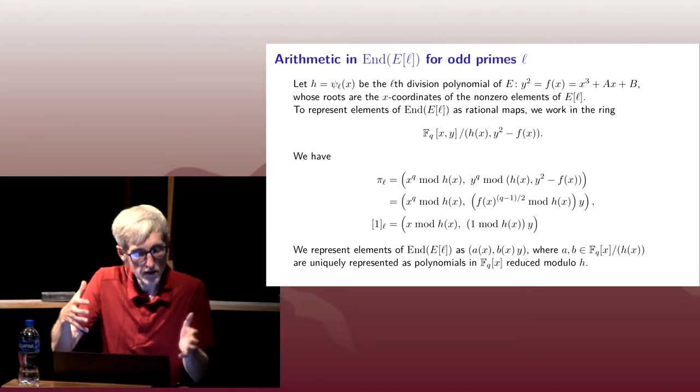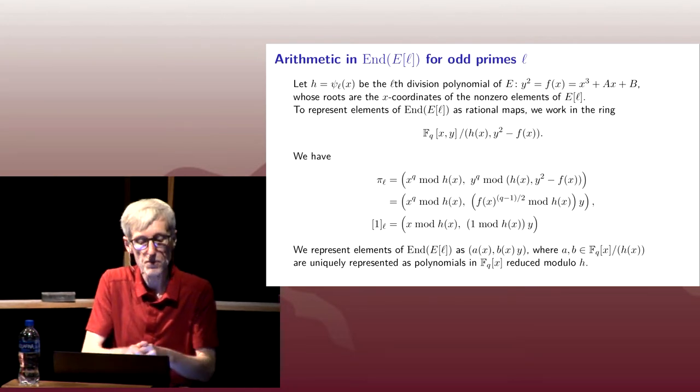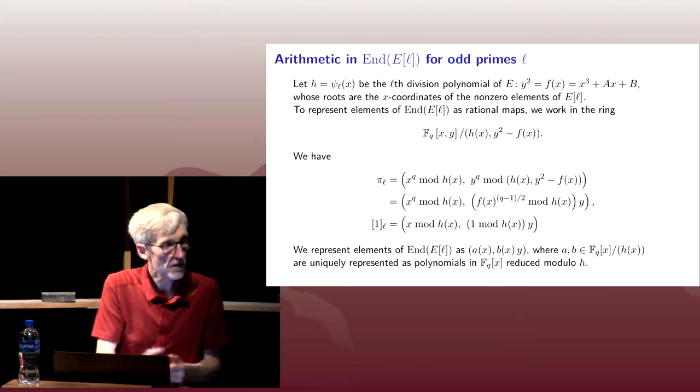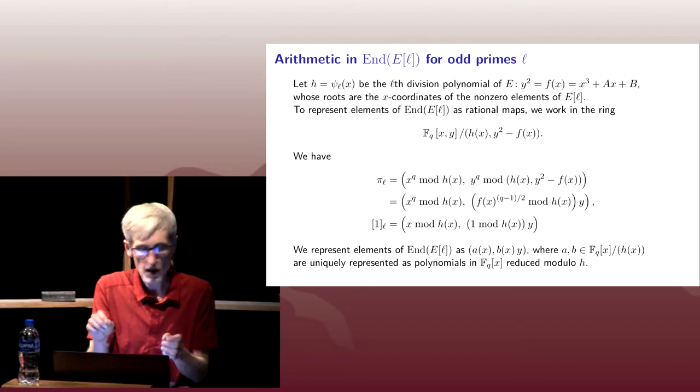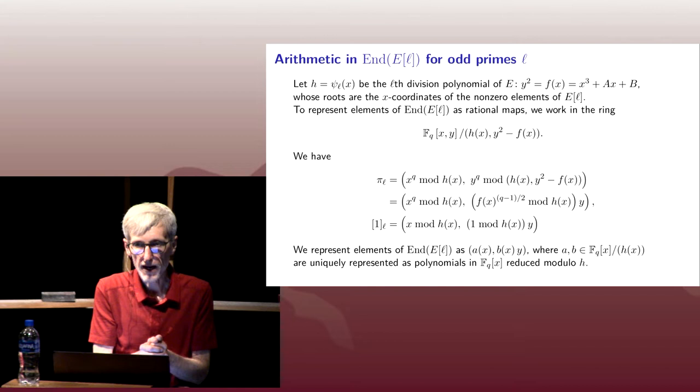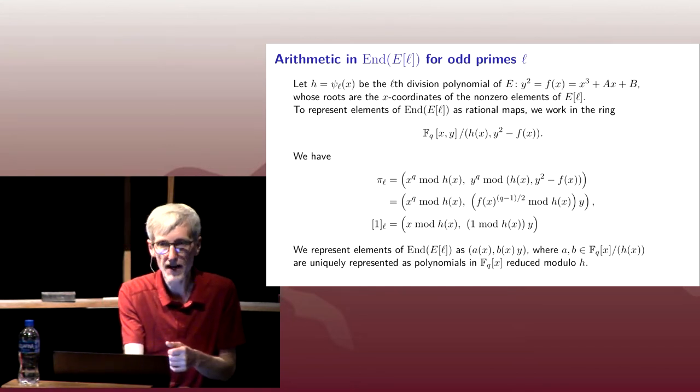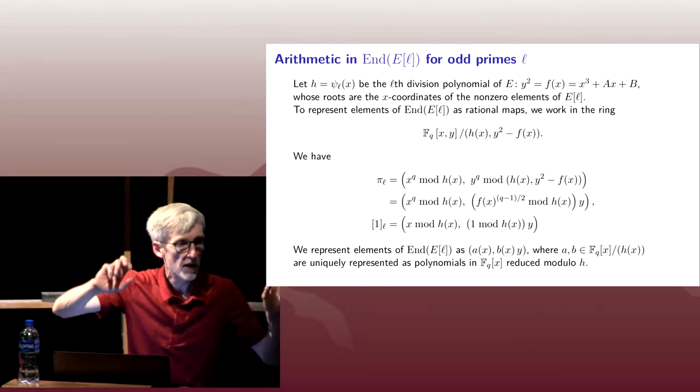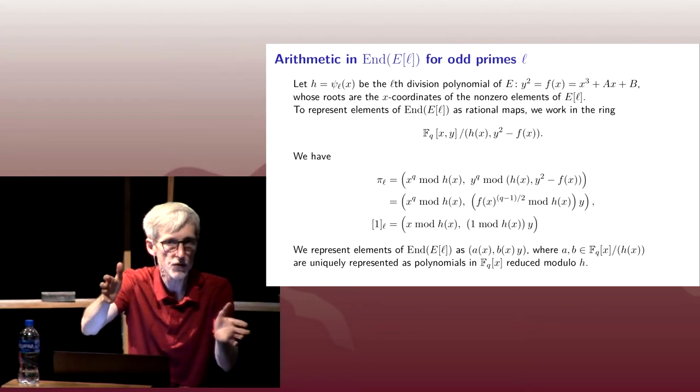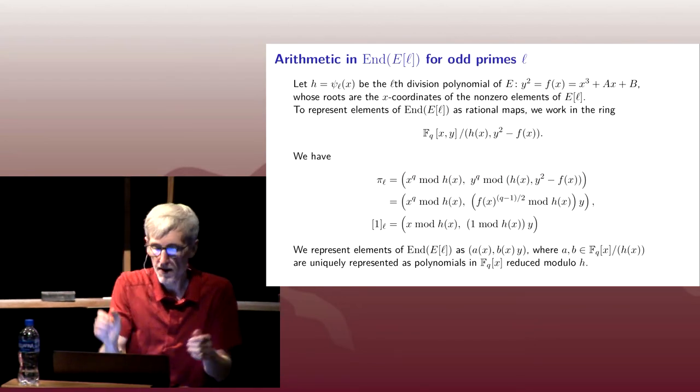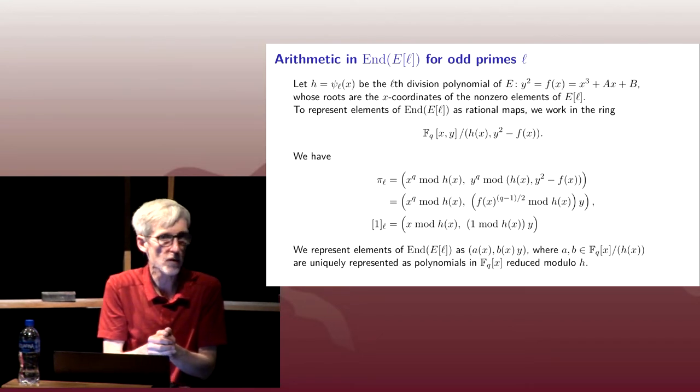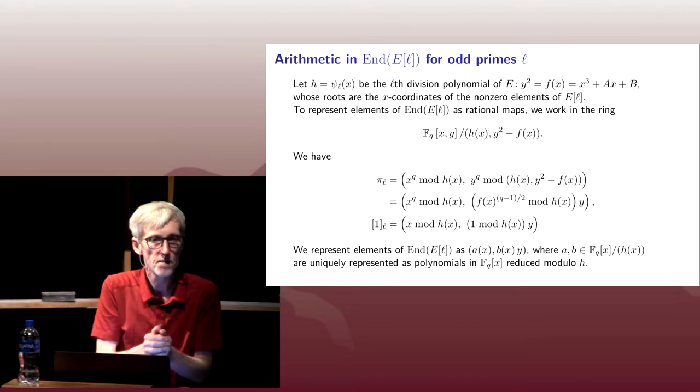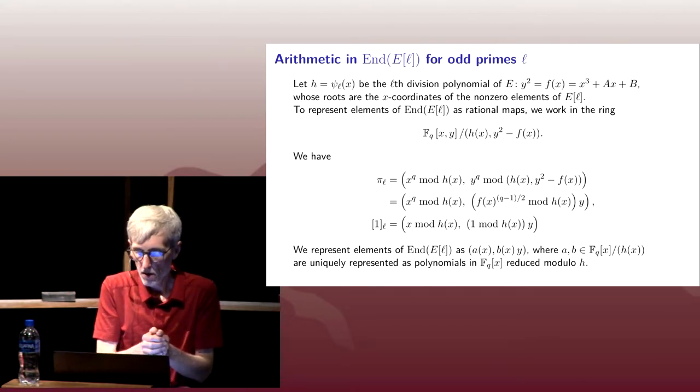For now, in the lecture notes I'll give more details on this, but I'll just ask you to accept for the moment that every element of our endomorphism ring restricted to the L-torsion has a unique representation of the form A(X), B(X)Y, where A and B are both reduced mod H. It's not true that every pair I write down—I can't just pick an A and B out of the air and throw a Y in there and say that's an endomorphism. That's definitely not true. What I'm claiming is that every endomorphism can be written uniquely in this form. And in particular, if I want to compare two endomorphisms, I can do so just by comparing the A's and the B's.